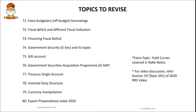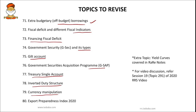Today's 10 topics include Economic Basics and Measuring Growth. In today's session we will be dealing with some important Current Affairs articles which deal with the basics. First, extra budgetary or off-budget borrowings. Second, fiscal deficit and different fiscal indicators — we will see the trend with respect to fiscal deficit. Next, sources of financing fiscal deficit, government securities, different types, gilt account, government security acquisition program, and treasury single account. Also inverted duty structure, currency manipulation, and Export Preparedness Index 2020 — all these topics were quite often in the news.